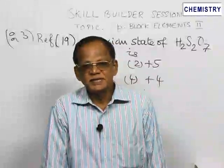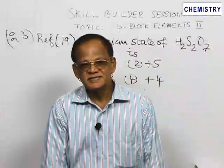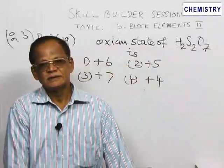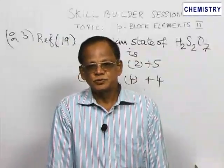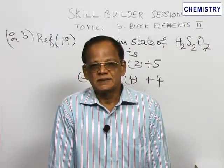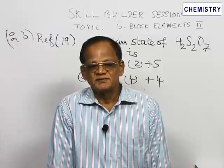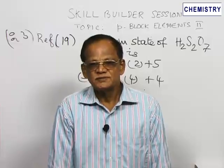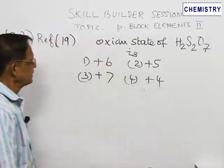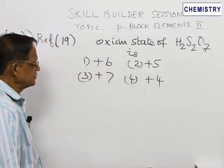Refer back to question number 19, the oxidation state of sulphur in H2S2O7. It is given as H2S2O8, but we have taken H2S2O7 is plus 6, plus 5, plus 7, plus 4.